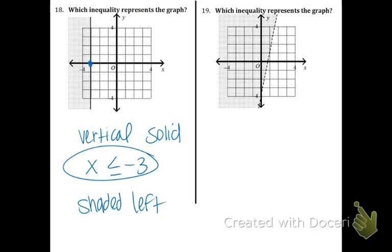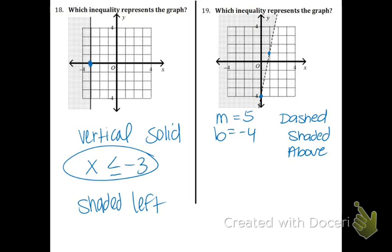Next one: the M and the B. The B is negative 4 and the M is going up 1, 2, 3, 4, 5 over 1 — that's positive 5. Now it is a dashed line and it is shaded above. The inequality always starts with y. Dashed shaded above is going to be greater than. And 5x goes in the M spot, and minus 4 goes in the B spot. So the answer to this one is y is greater than 5x minus 4.